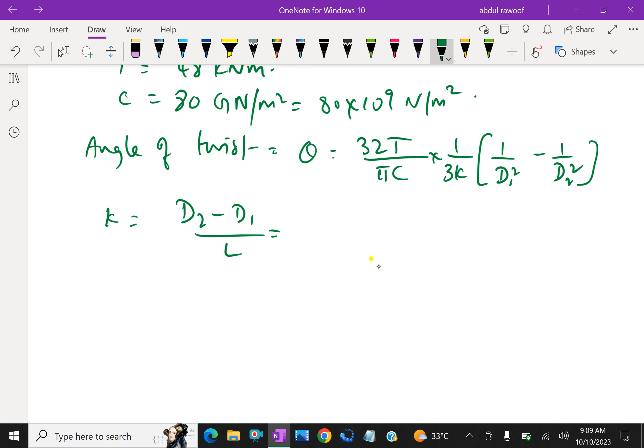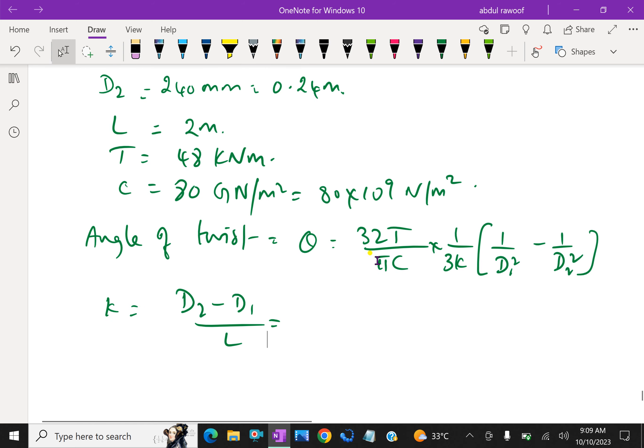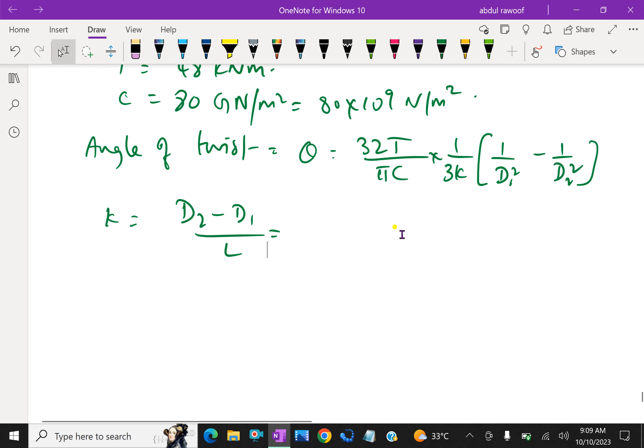Let us calculate K: 0.24 minus 0.16 over L is 2 meter which gives 0.04.